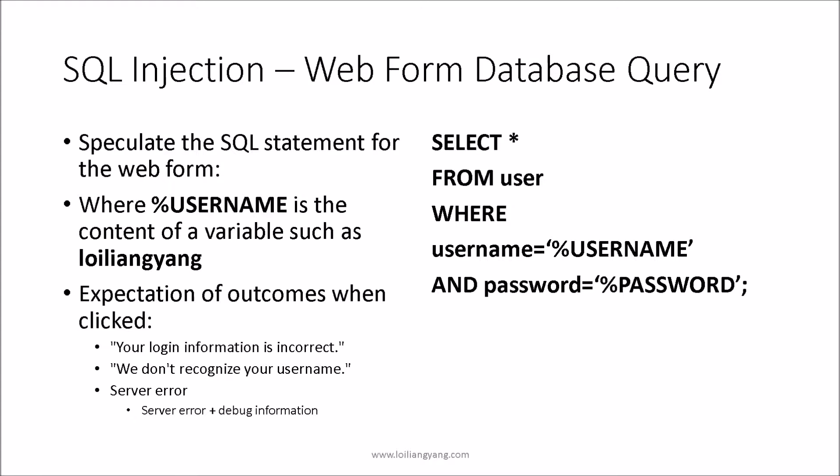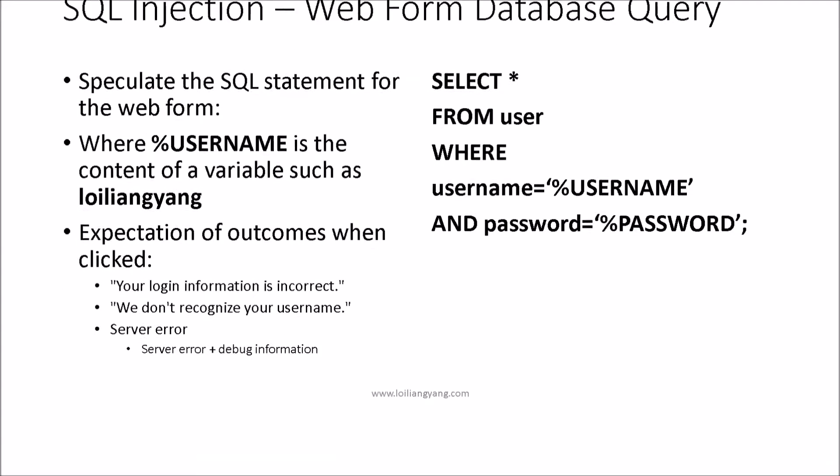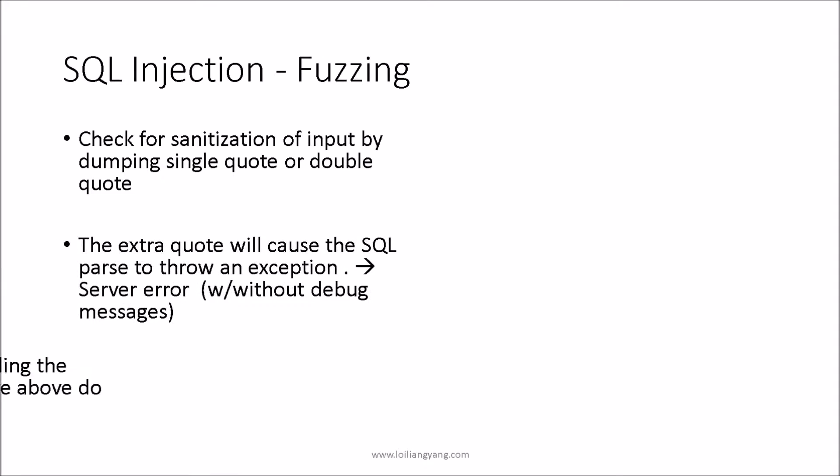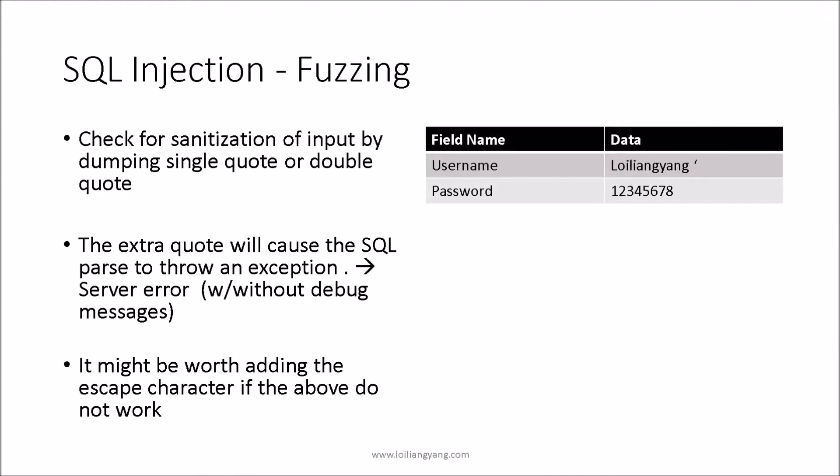Logically, we also need to map out the potential outcomes from the query. It could be that the login information has been mailed to your email and the username is unrecognized, or there are some types of server error with debug information. Server errors with debug information can present a lot of findings for us to further the exploit. We then need to check for input sanitization from the web form by dumping single quotes or double quotes into the web form — either the username or password field can be used to dump those invalid characters.